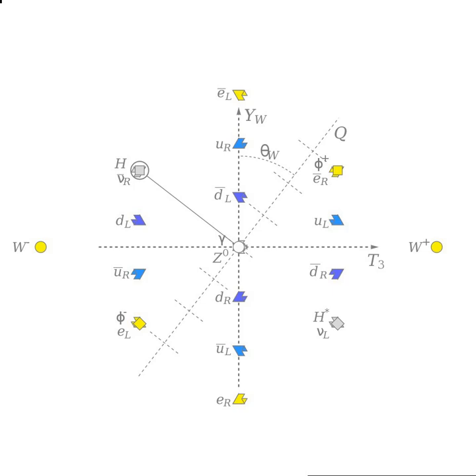Weak hypercharge is the generator of the U(1) component of the electroweak gauge group, SU(2) times U(1), and its associated quantum field B mixes with the W3 electroweak quantum field to produce the observed Z-gauge boson and the photon of quantum electrodynamics. The weak hypercharge satisfies the relation Q equals T3 plus one-half YW, where Q is the electric charge and T3 is the third component of weak isospin.